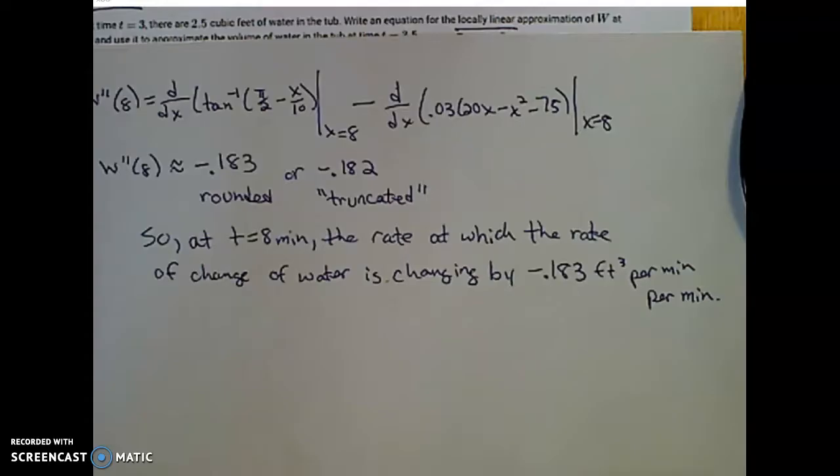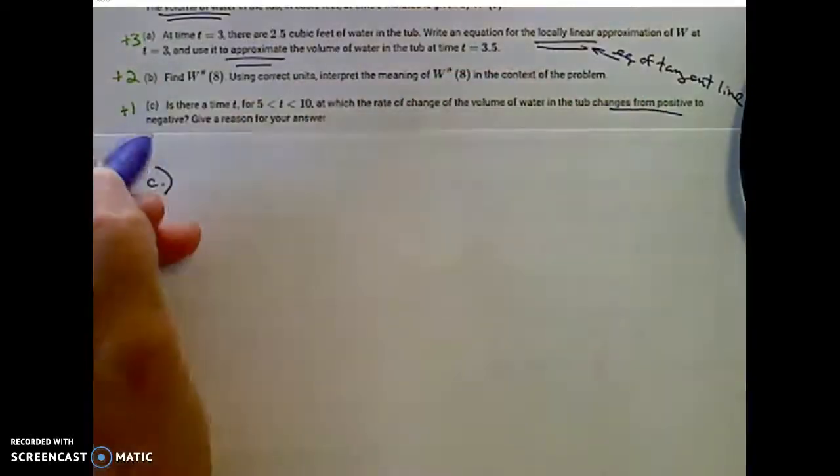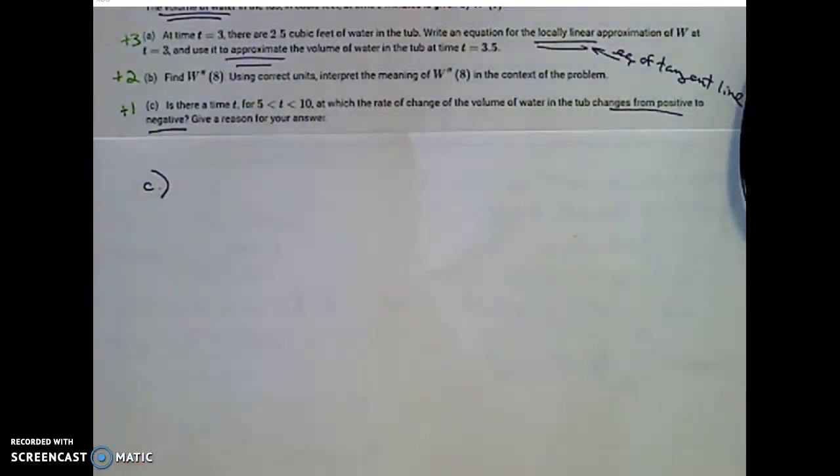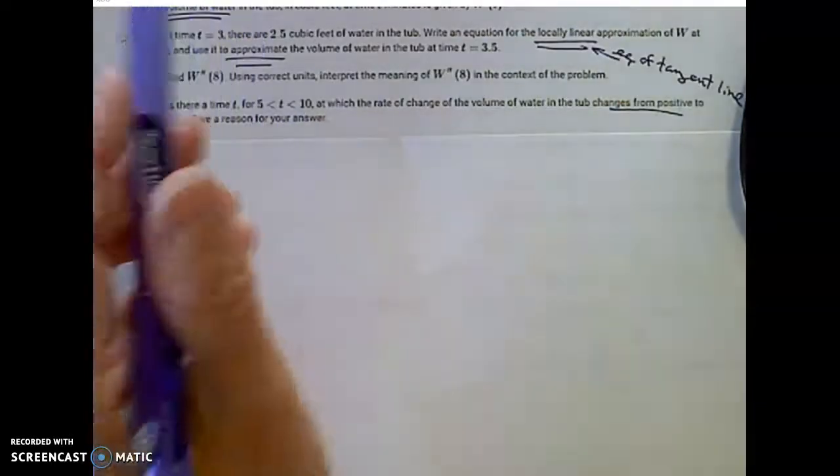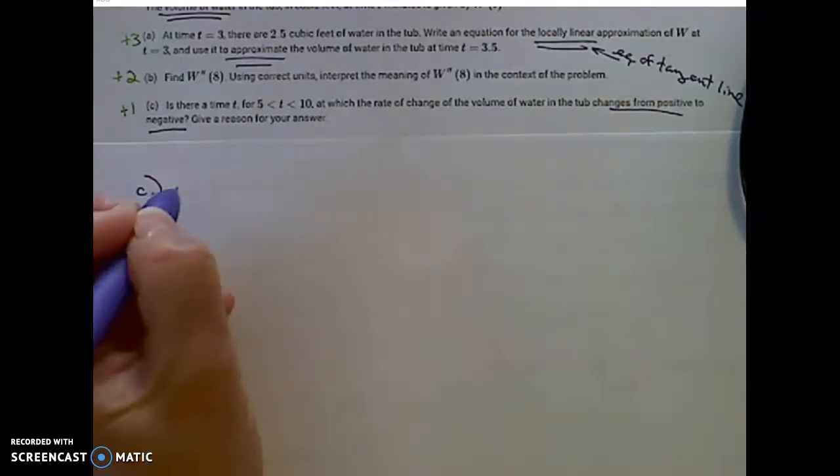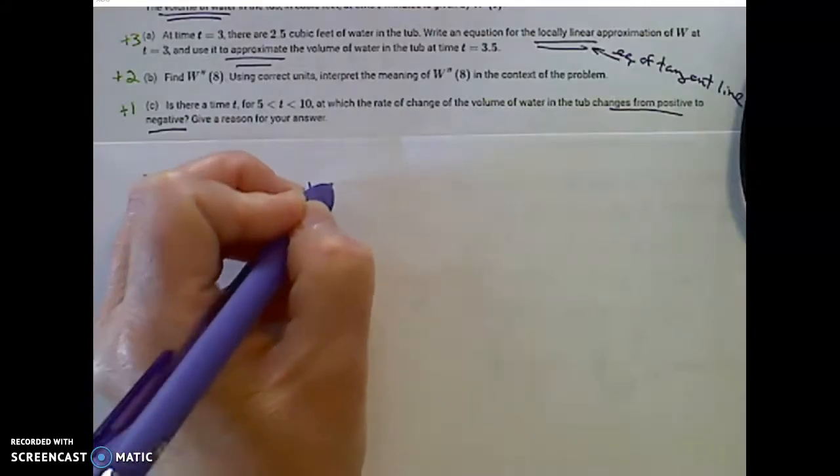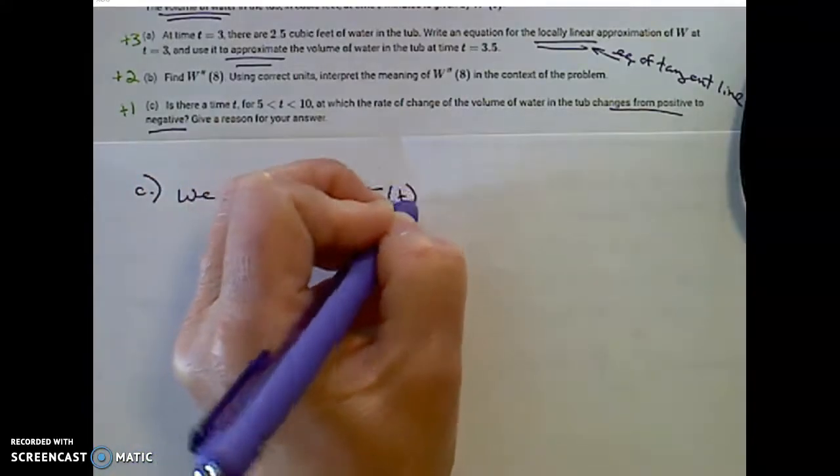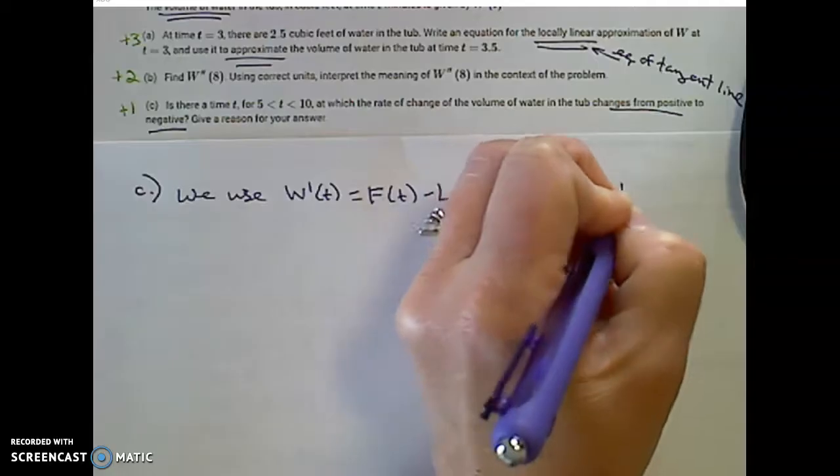Let's move on to part C and read it again. Part C asks us, is there a time T between time 5 and 10 at which the rate of change of volume changes from positive to negative and give a reason for your answer? This is only a one-point portion and it's very calculator intensive. At that time frame between 5 and 10, remember that's when I was filling and leaking? So in this time frame, we use the rate of change of volume will be the filling rate minus the leaking rate for times between 5 and 10.